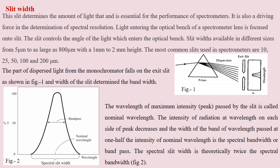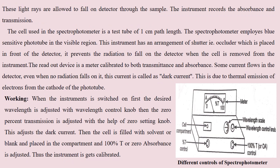The spectral slit width is theoretically twice the spectral bandwidth, as shown in figure 2. These lights are allowed to fall on the detector through the sample. The cell used in the spectrometer is of 1 cm path length, also known as a cuvette. Generally a spectrophotometer employs a blue-sensitive phototube in the visible region. This instrument has an arrangement of a shutter or occluder placed in front of the detector. The function of this occluder is to prevent radiation from falling on the detector when the cell is removed from the instrument. Another part is the readout device, which is a meter calibrated to both absorbance and transmittance.